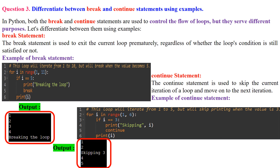Question 3: Differentiate between break and continue statements using examples. In Python, both break and continue are used to control the flow of loops, but they serve different purposes. The break statement exits the current loop prematurely, regardless of whether the loop's condition is still satisfied. In this example, a for loop iterates over values from 1 to 10. When i equals 5, 'breaking the loop' is printed and the break statement terminates the loop — so only numbers 1 to 4 are printed.